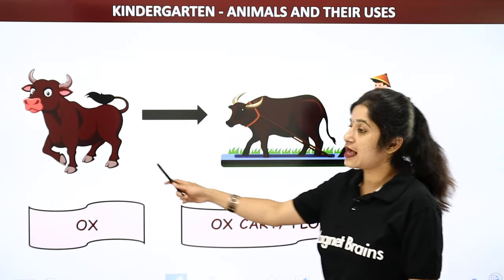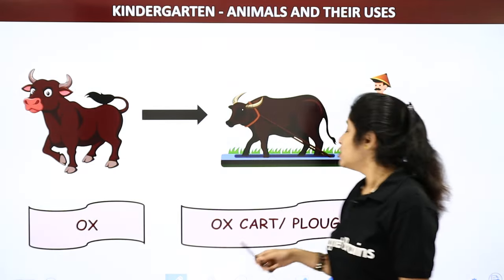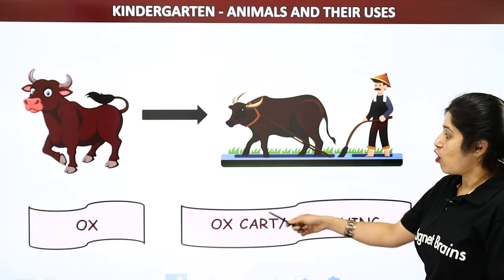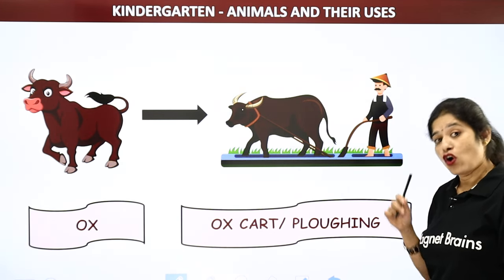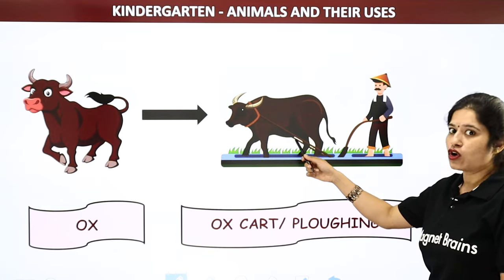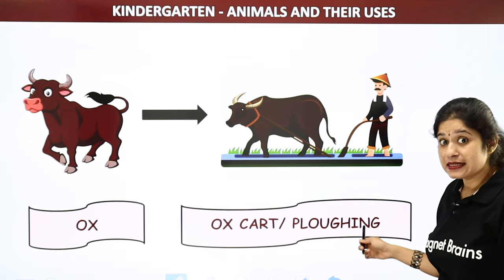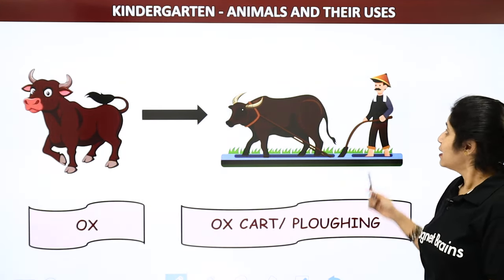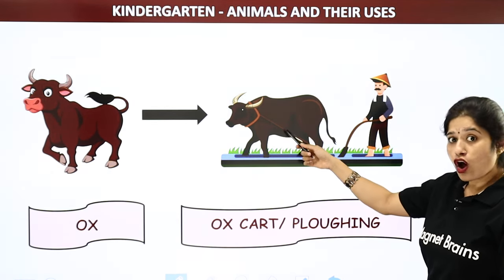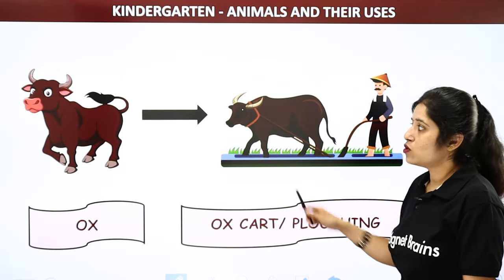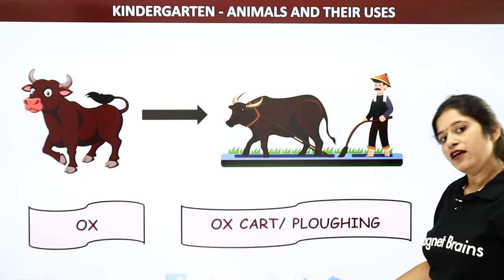Now let's see — this is an ox. Ox is used as an ox cart, the same way horse is used. So we use horse cart as well as ox cart. The ox is also used for plowing the fields by the farmers. Can you see this farmer? This farmer is plowing the fields using this ox. So we use ox for ox cart as well as for plowing of the fields.